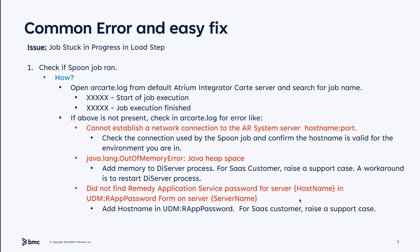That last one — did not find the media application service password — is about the UDM Wrap Password, where you need the host name, not the server name. Java heap space is an issue with the UDI server — you'll need to add memory because your job is very large. If loading a large dataset like computer CIs, you might need two or three gigs of memory on your UDI server; by default it comes with one gig. For SaaS customers, please raise a support case and we'll take care of that. The first error can also occur if you're using a gateway and the connection used in the Spoon job doesn't have the correct host name.